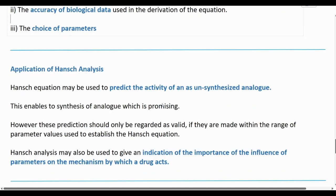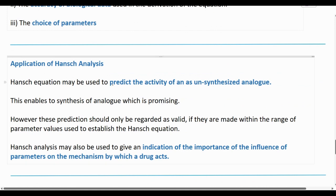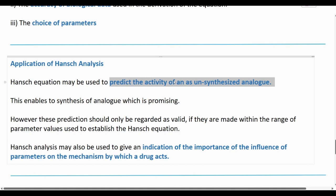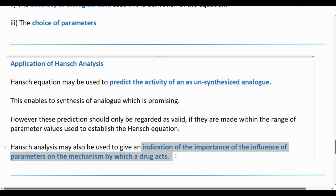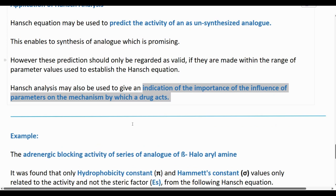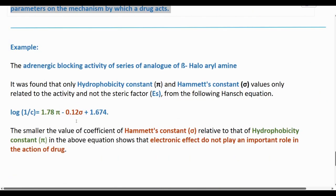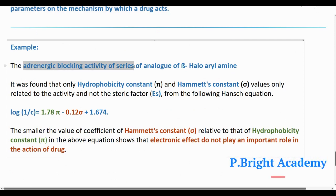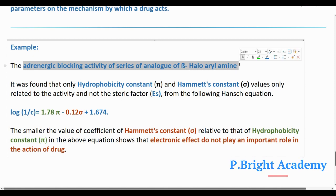The application of Hansch analysis is in drug discovery and molecule development. It can indicate what the influencing parameters are on the mechanism of action. If we have a drug, we have to use the parameters for drug binding and action. An example is the blocking activity of analogs of beta-halo-aryl amines.